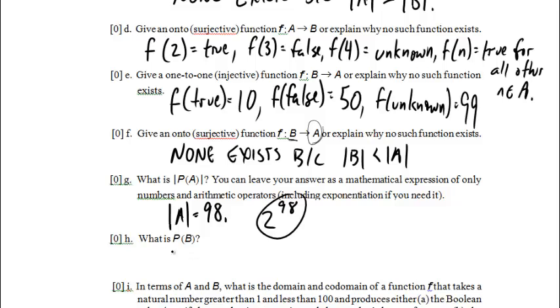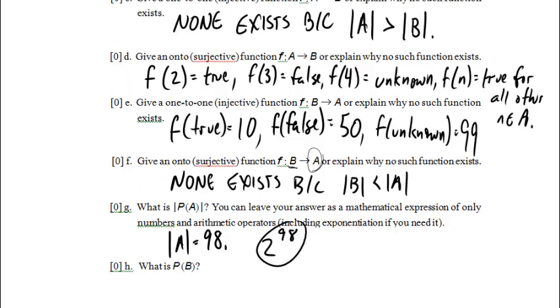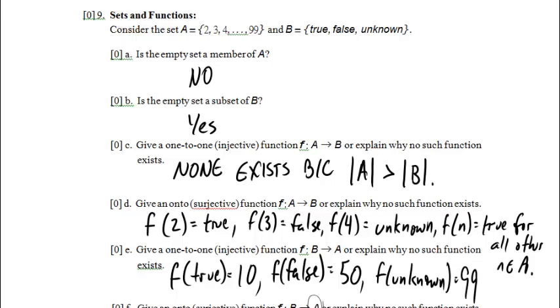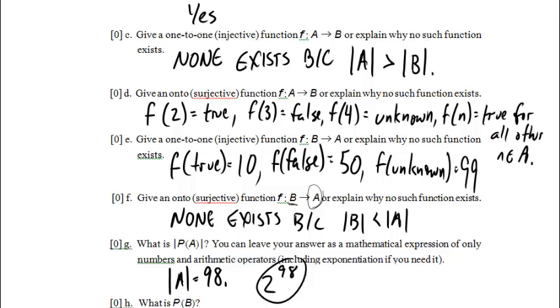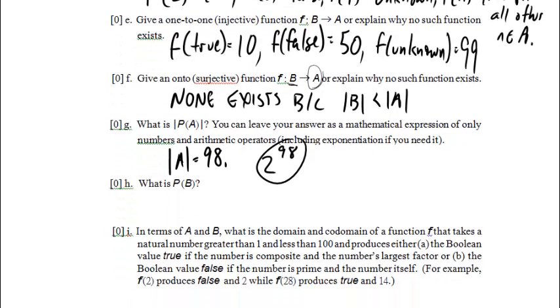What is the power set of B? Hopefully B is not as big. B had true, false, and unknown. You know what, I'm just going to write T, F, and U for short forms. So the power set of B is equal to the empty set.